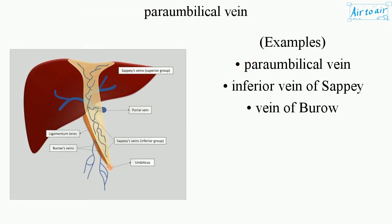Examples: Paraumbilical Vein, Inferior Vein of Sapi, Vein of Burro.